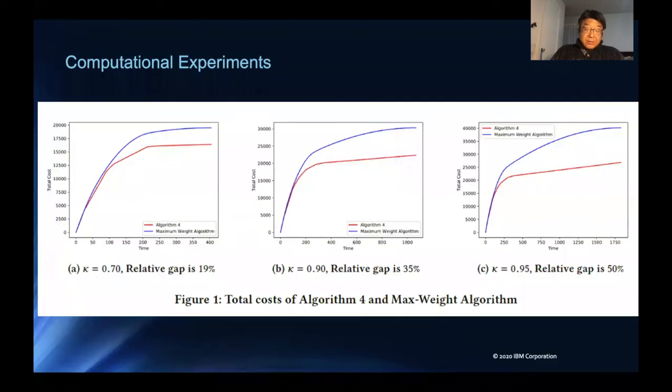For kappa equal to 0.7, 0.9, and 0.95, we see the differences of the performance is significant and the relative gaps are 19%, 35%, and 50% respectively.